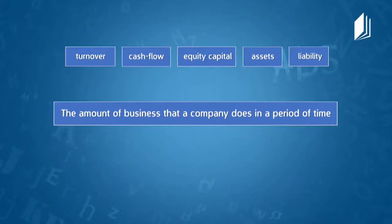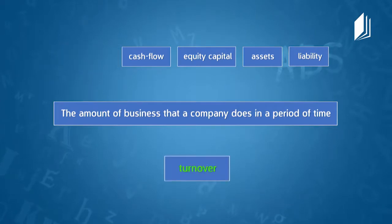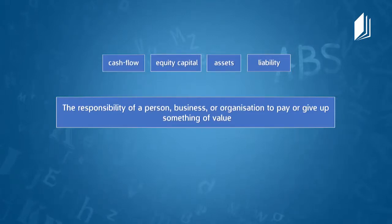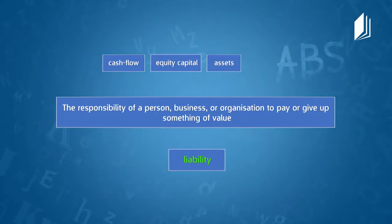Now let's practice. We'll see the definitions of words and choose the right word. Here's the first definition: 'The amount of business that a company does in a period of time.' That must be turnover — and I'm right! Next definition: 'The responsibility of a person, business, or organization to pay or give up something of value.' The answer has got to be liability — and you're right, Mr. Daryl.